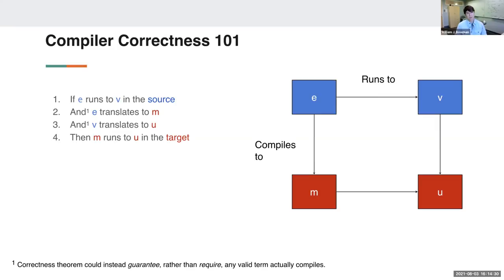The key here is that we're defining correctness in terms of running programs. We need a whole program for this theorem to make sense. This doesn't capture linking, which is something we all do when we write programs. So we could generalize this theorem to handle linking.